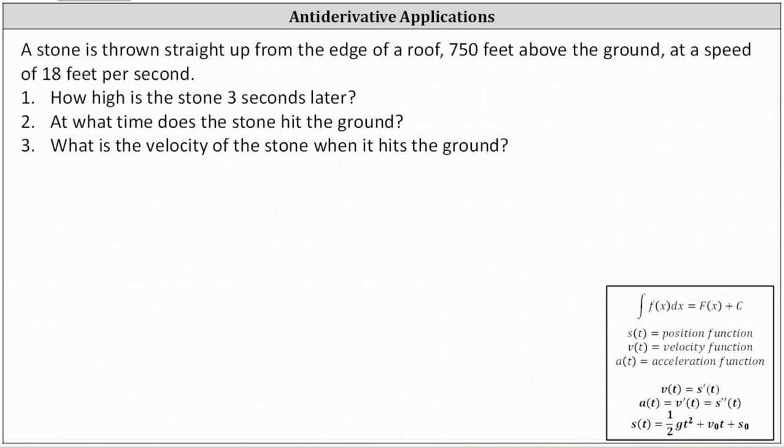A stone is thrown straight up from the edge of a roof 750 feet above the ground at a speed of 18 feet per second. Number one: how high is the stone three seconds later? Two: at what time does the stone hit the ground? And three: what is the velocity of the stone when it hits the ground?